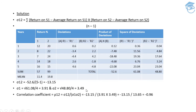Lastly, it has been asked that we provide the correlation coefficient as well, which uses the formula: covariance divided by (standard deviation of security one multiplied by standard deviation of security two). So it comes out to -13.15 divided by 3.91 multiplied by 3.49, giving a figure of negative 0.96.